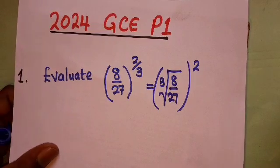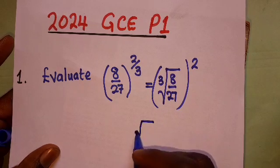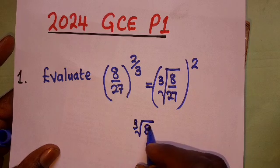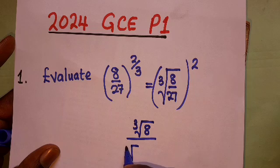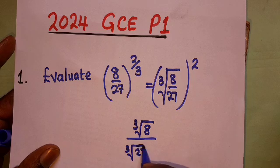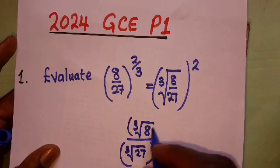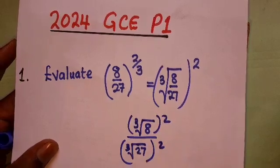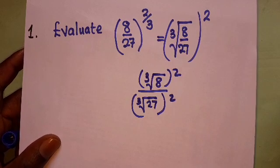I want to help you understand that this can also be done this way, where we look at just the cube root of 8 over the cube root of 27. It's the same way. If you want, you can put 2 here and also put 2 there. This is one and the same thing.